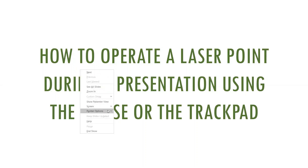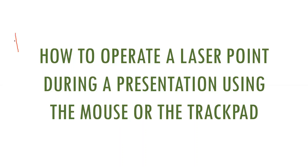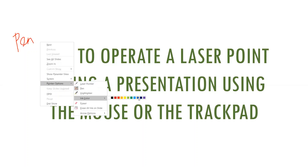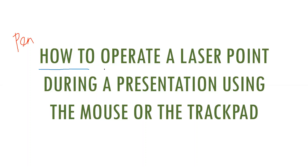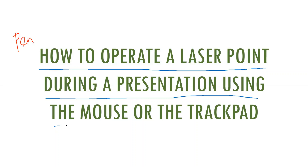Moving on to the next pointer option, we have the pen, which helps you write anything across the screen, and you can even change the color. So say I change the color to blue and use it to underline important points in the slide. The disadvantage for the pen option is that you cannot increase or decrease the thickness, and you need extremely steady hands to get legible handwriting — or you can use a stylus pen on the trackpad if you have one.